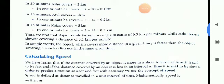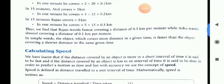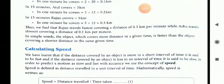So you can see here Ashu covers 2 kilometers and in one minute he covers 0.1 kilometer. Atul covers 0.2 kilometer and Rajan covers 0.3 kilometer. So what we find that the distance covered by Rajan is...